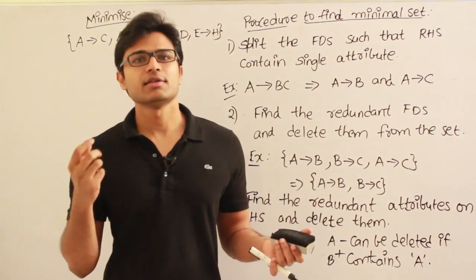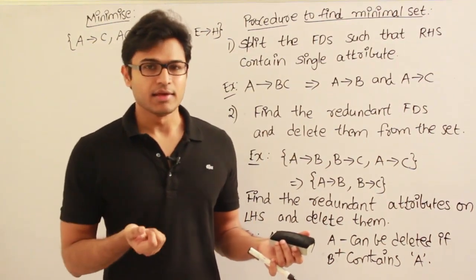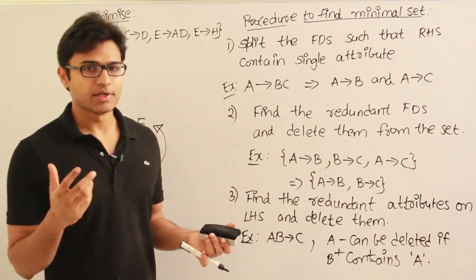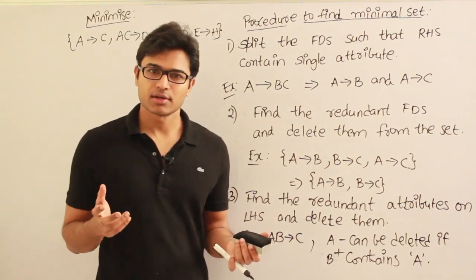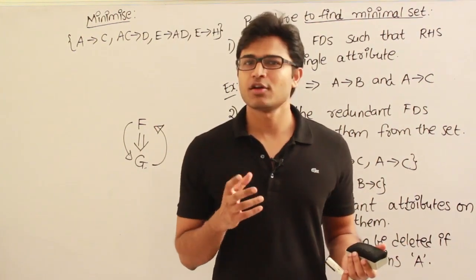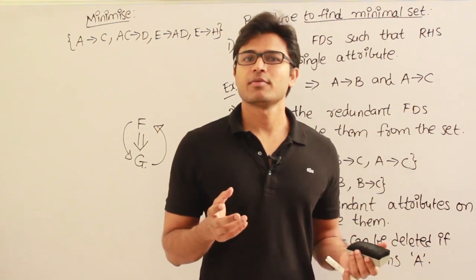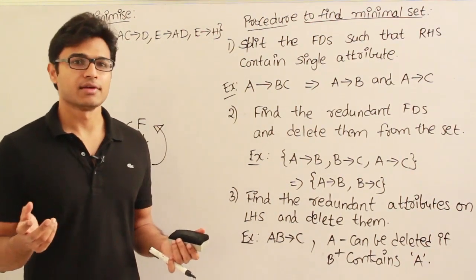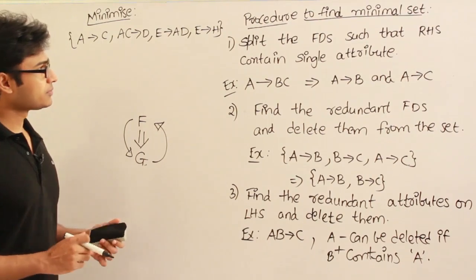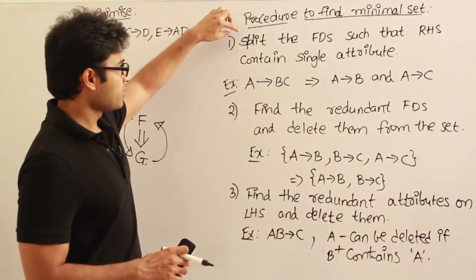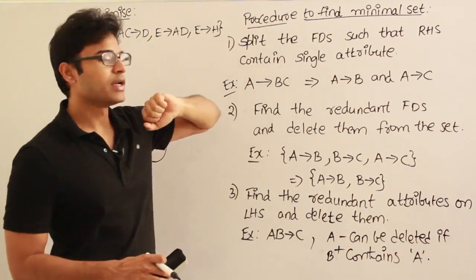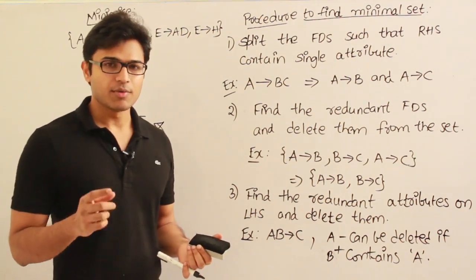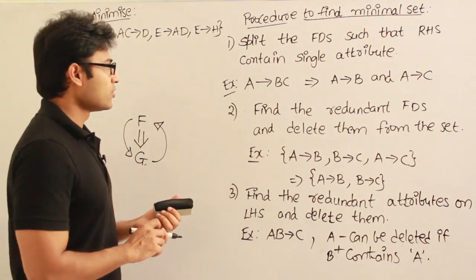If an FD set is already in its minimal form, you will not be able to minimize it. In case it is not in minimal form, you will be able to minimize it. If you follow a few steps it will be easy. Using properties of functional dependencies alone can take a lot of time and the answer might not be right. So we shall have a different procedure. If you follow that procedure, a minimal set is always guaranteed if it exists. The first step is to split the FDs such that the right hand side contains single attributes, before applying the procedure.